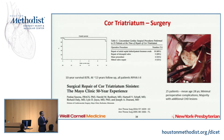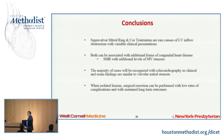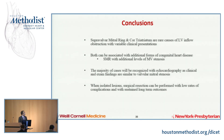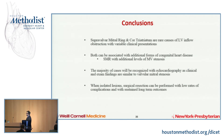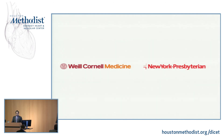To conclude: supravalvular mitral stenosis and cor triatriatum are rare causes of LV inflow obstruction with variable clinical presentations. Both can be associated with other forms of congenital heart disease, but with supravalvular mitral rings, be especially suspicious of annular, leaflet, chordal, or papillary problems as well. The majority of cases will be recognized with echo, and exam findings will be akin to rheumatic mitral stenosis without the opening snap. When you have isolated pure supravalvular mitral ring or cor triatriatum, these can be corrected surgically with low rates of complications and really sustained long-term outcomes.